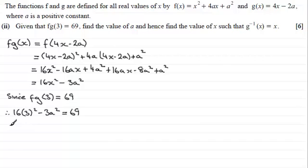So 16 times 3², 16 times 9, that's 144, so we've got 144 minus 3a² equals 69. And if I subtract 69 from both sides and add 3a² to both sides, I end up with 3a² equals 144 take away 69, which is 75.